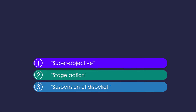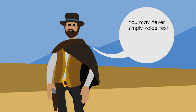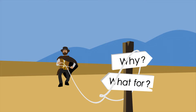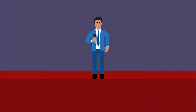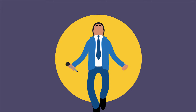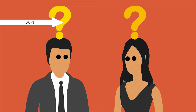Stanislavski himself called it the super objective. The super objective is the actor's goal. You cannot just voice a text — you always have to understand why you're doing it. What are you pursuing? What do you want? For a non-actor, this principle can be enunciated as follows: what is my audience expected to do after my performance? That's it. What are they expected to do.